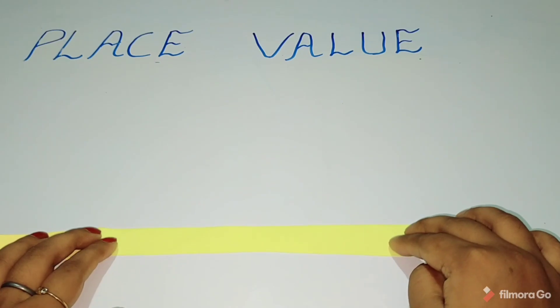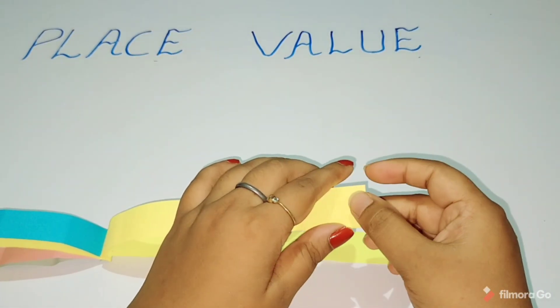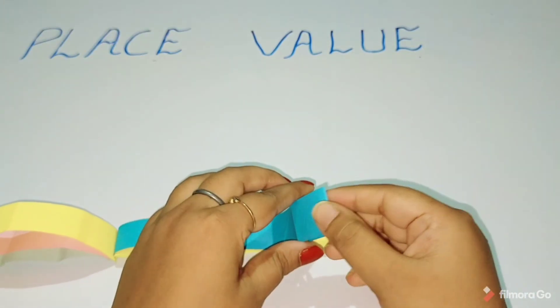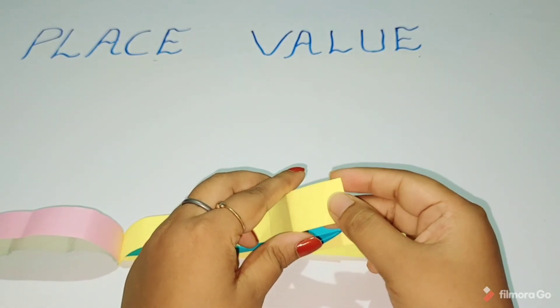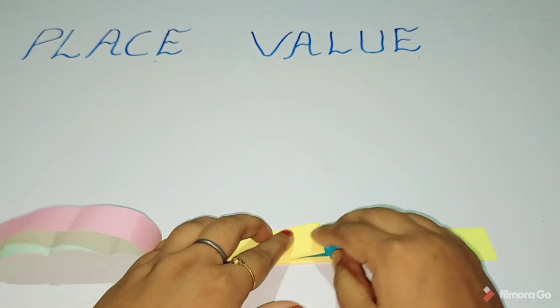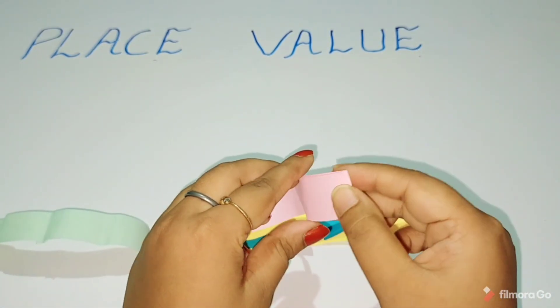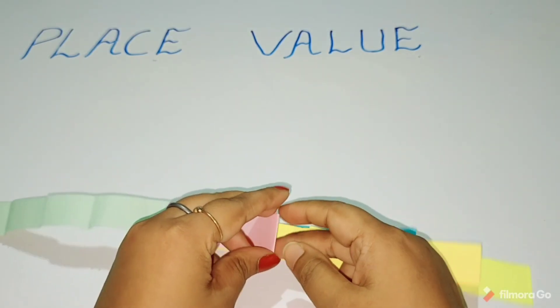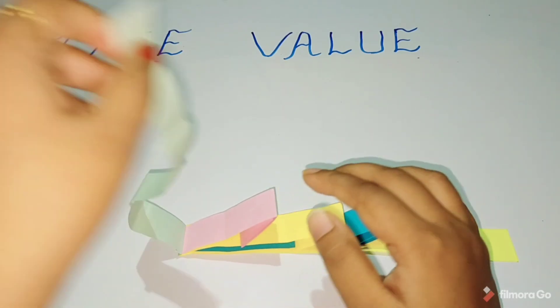We'll leave the first paper strip as it is and fold the second one once, third one by two steps, fourth one by three steps, fifth one by four steps, and sixth one by five steps.